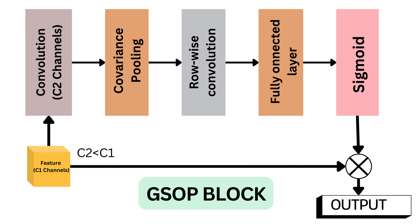In the excitation module, the GSOP block employs row-wise convolution to preserve structural information and generate a vector. This vector undergoes further processing with a fully connected layer and a sigmoid function to produce an attention vector with the dimensionality of C1. Finally, the input features are multiplied by this attention vector, akin to the mechanism in an SE block. The incorporation of second-order pooling in GSOP blocks has enhanced their ability to gather global information compared to SE blocks; however, this improvement comes with an associated increase in computational demands.